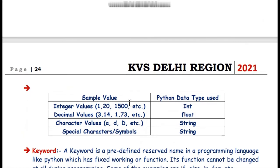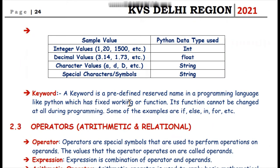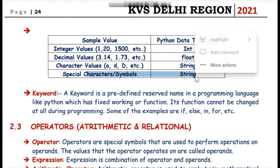You can see here we have some sample values. We have integer values where the data type should be treated as int. For decimal values, float. For character type values like alphabets and alphanumeric characters, we will use string. Special characters and symbols also come in string. So data types are the building blocks of any programming language like Python.